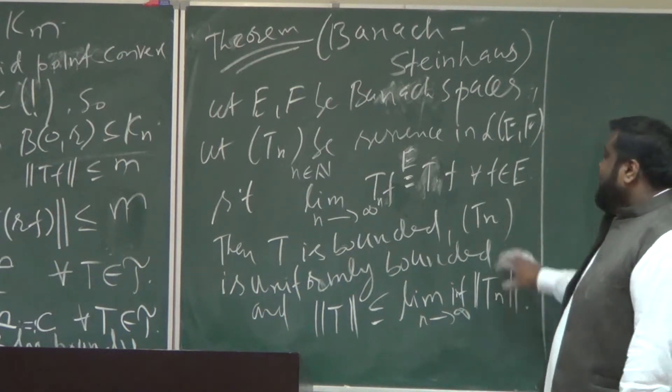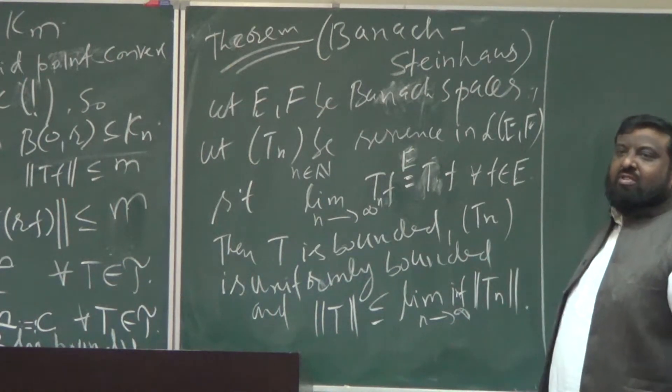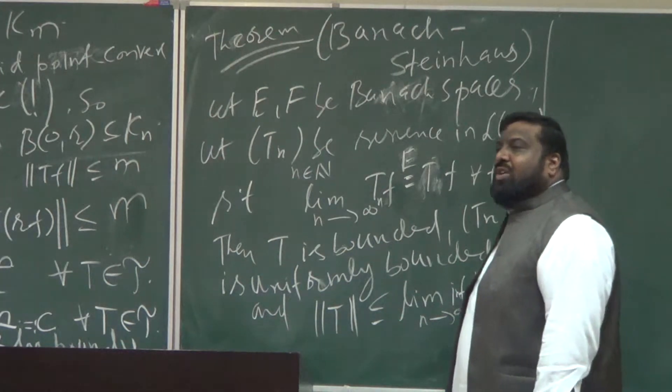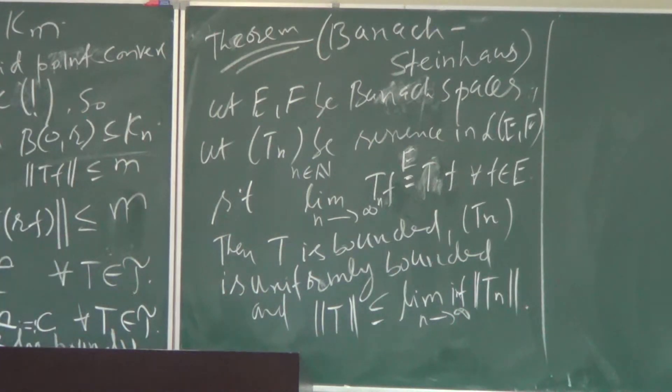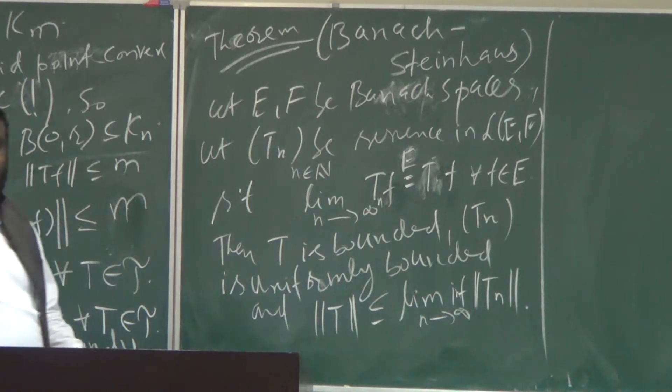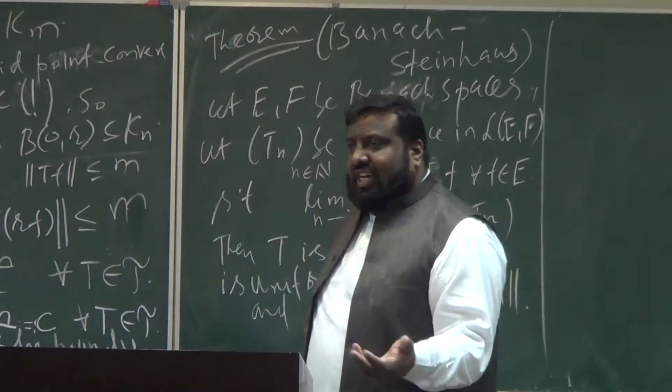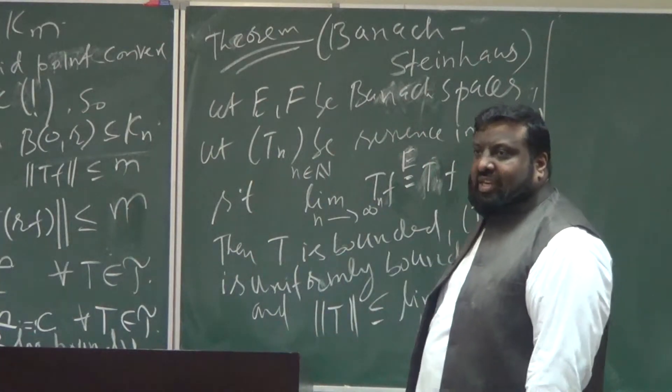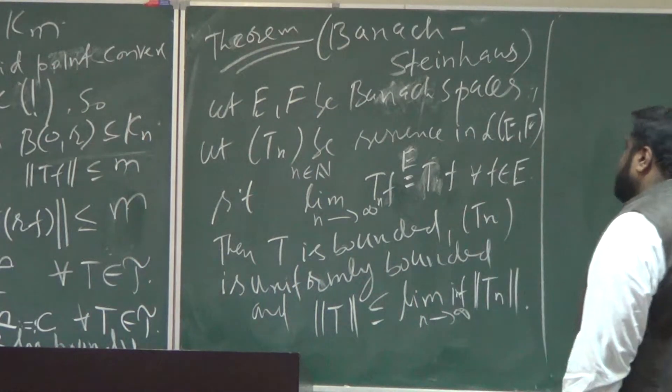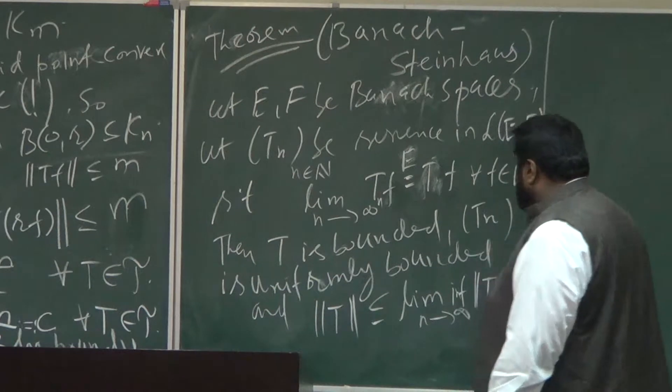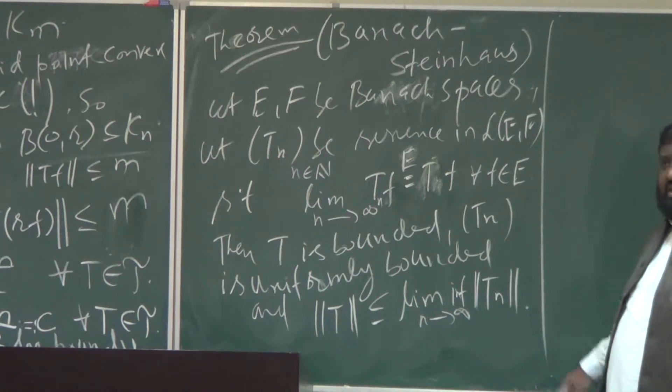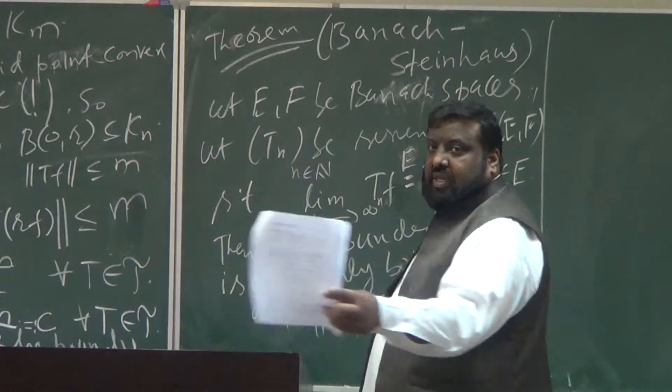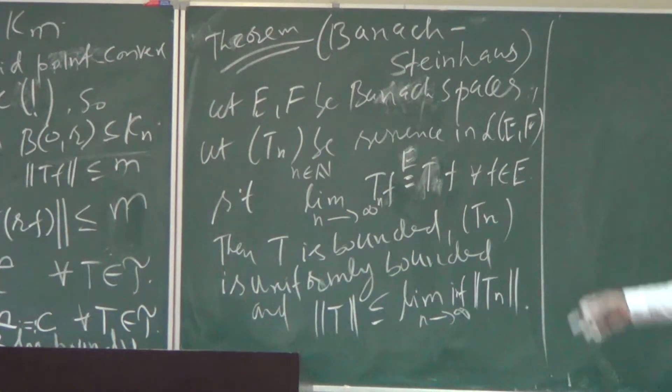And this sequence must be uniformly bounded as well. So it's like a sequence is also a collection. So we know what is the meaning of a collection of linear bounded operators being uniformly bounded: it means that you can find a constant such that the norm of all those are less than or equal to that constant. And the norm of this T can be computed or can be estimated by the limits of the norms of Tn.